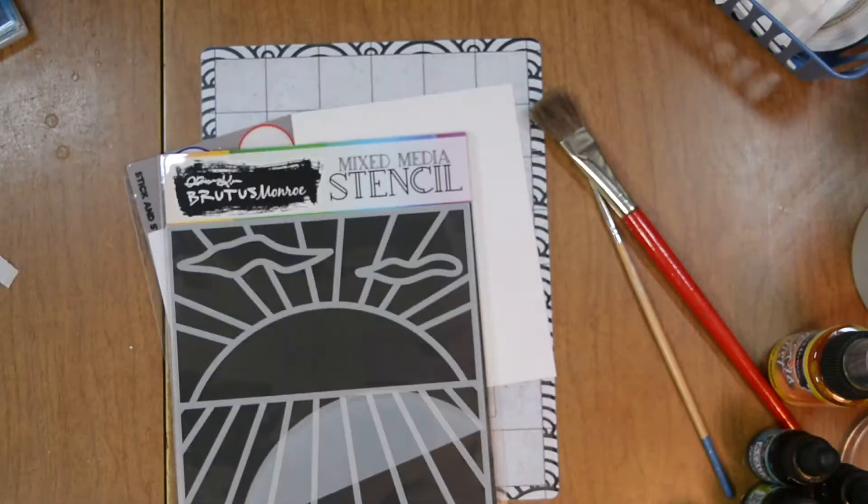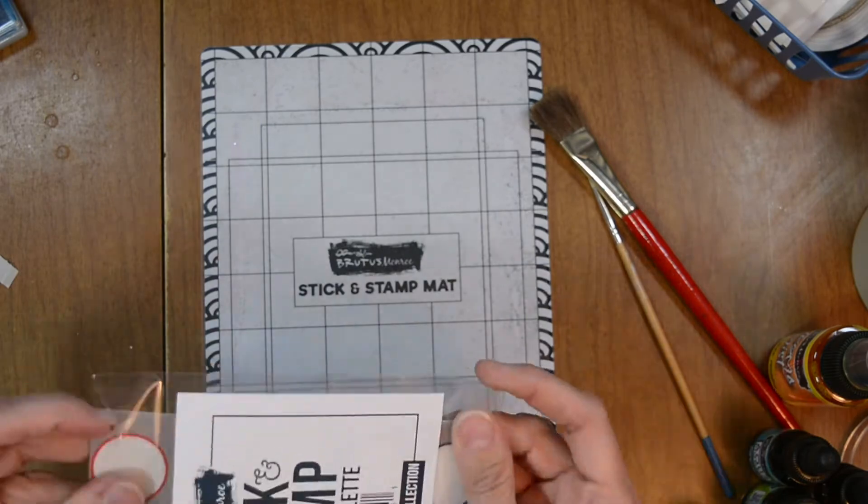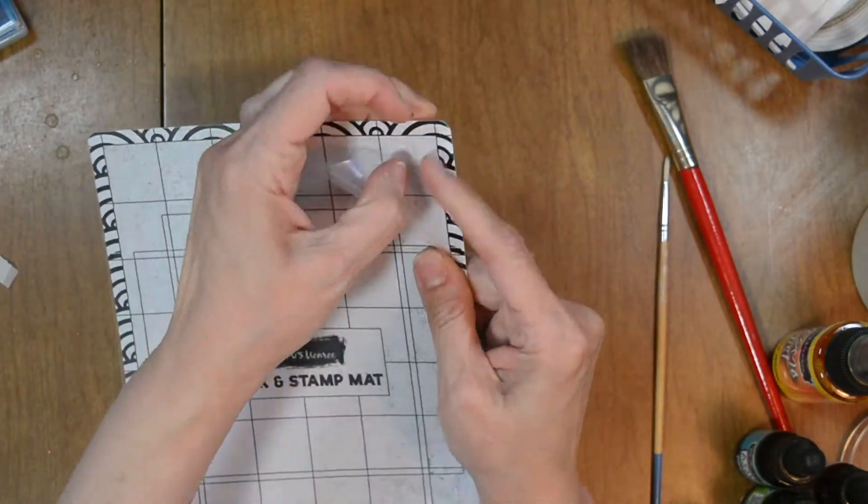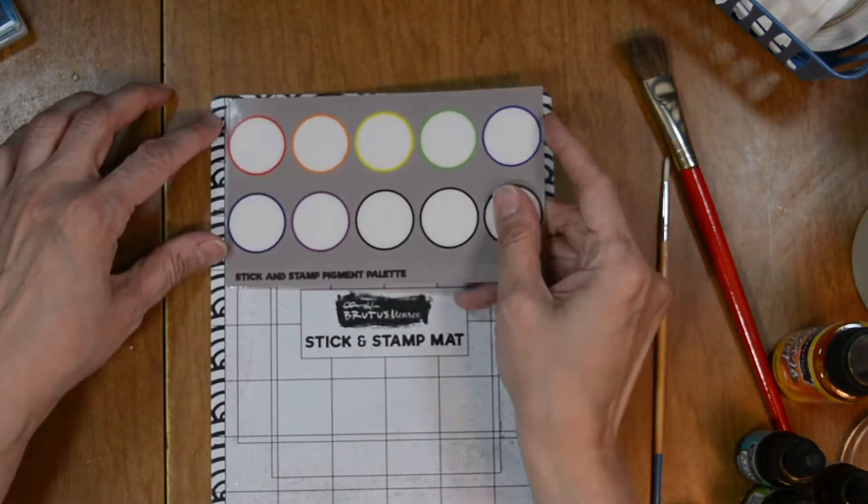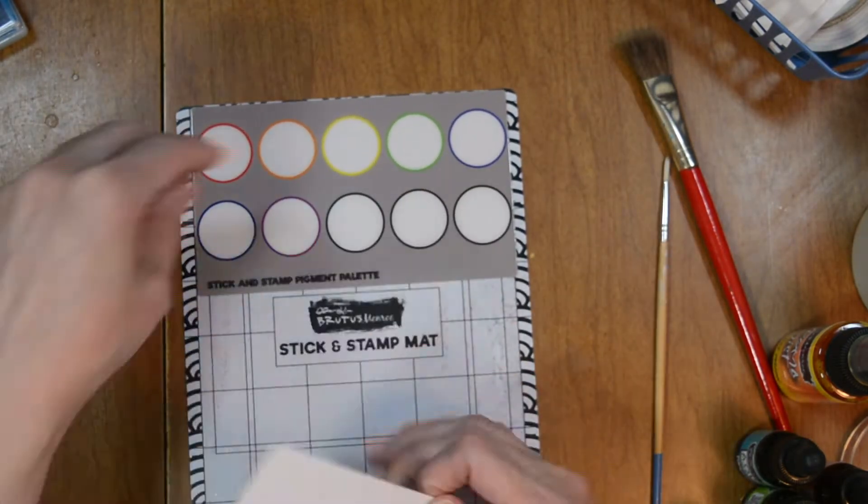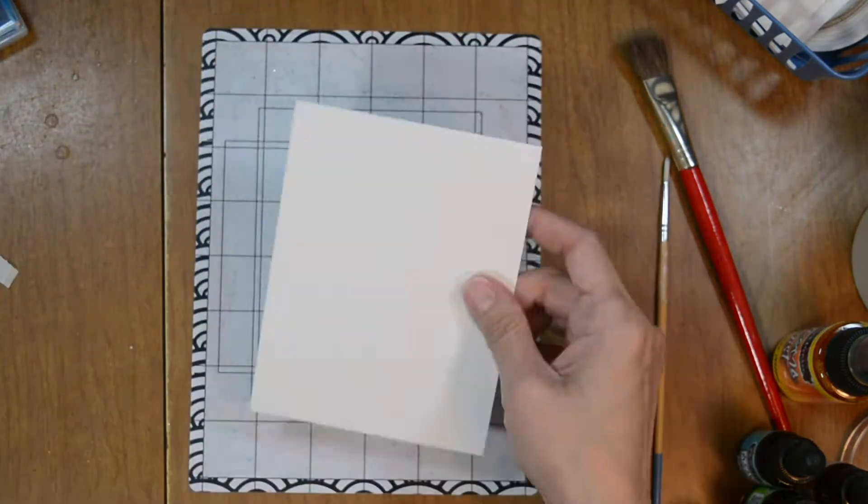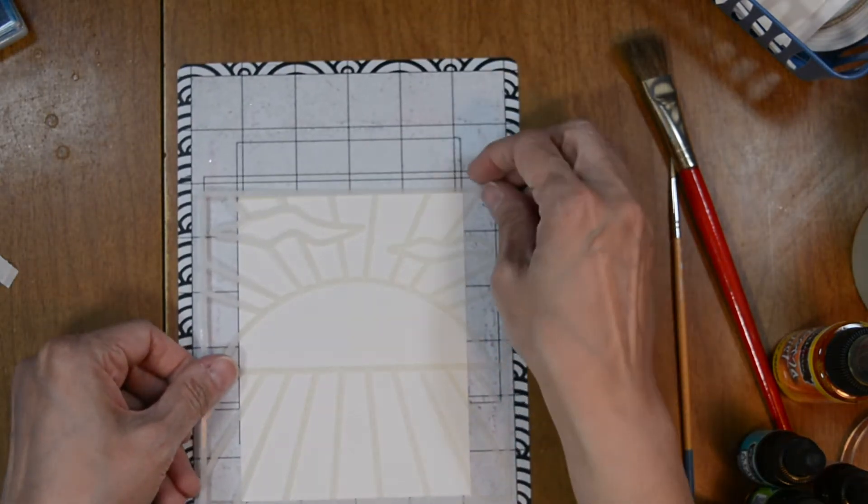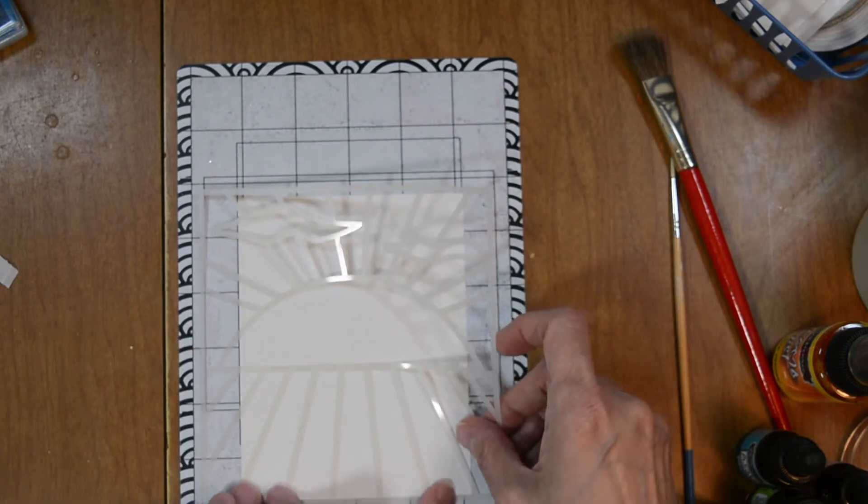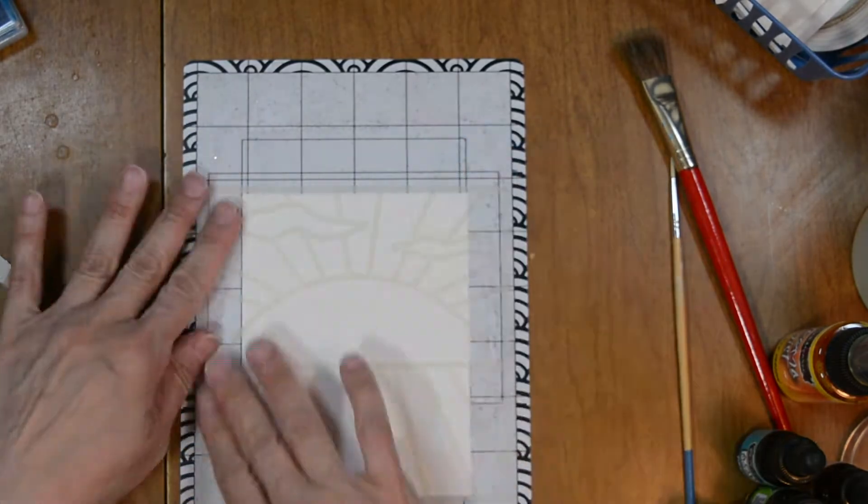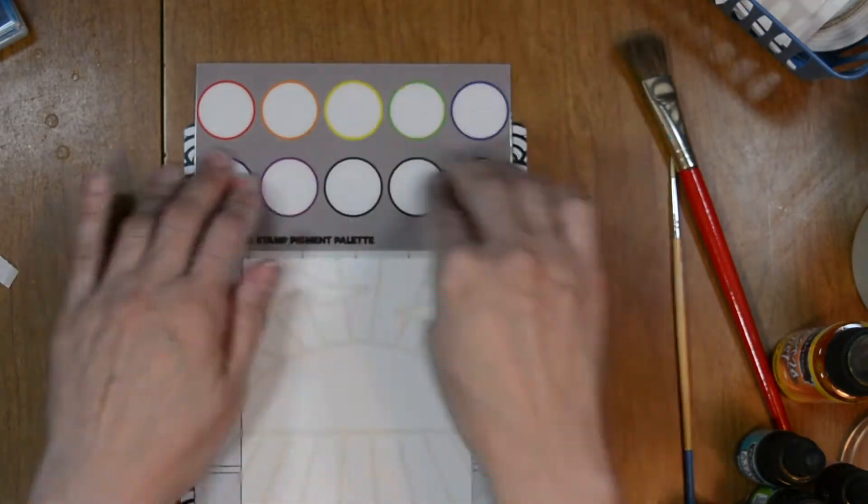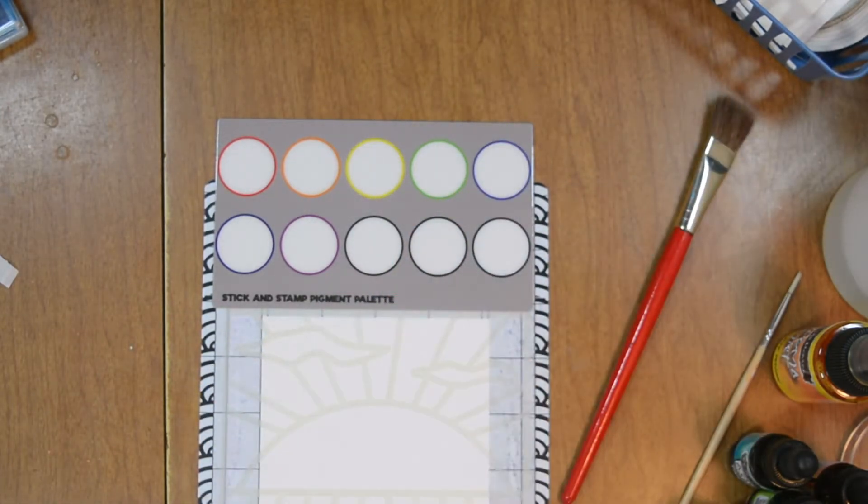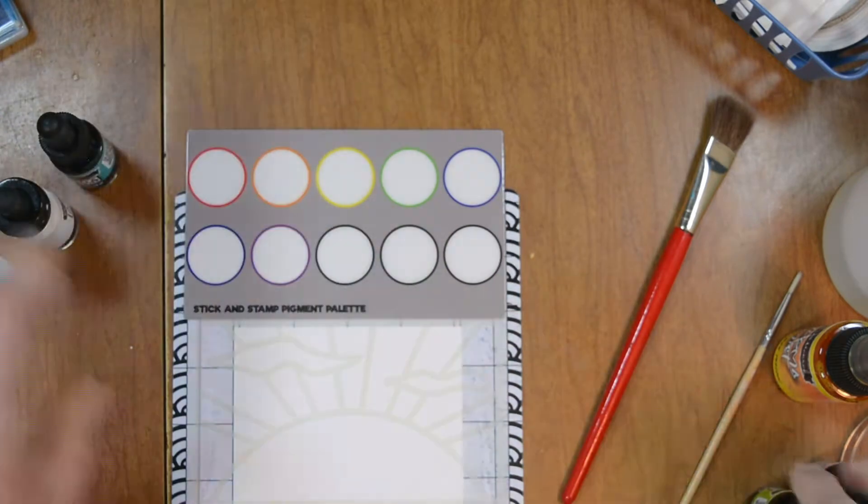We're going to start with our aqua pigment watercolor paper, our stencil, our pigment palette, and our stick and stamp mat. This pigment palette has a little spot for all the colors that you may need, and some extra spots that are just in black, and those are perfect for when you mix colors. I'm going to stick my cardstock down first, our watercolor paper, our stencil on top of that. Our stick and stamp mat will hold my stencil in place. I also have some water, two brushes, a bigger one and a little detailed one, so that we can paint our background.